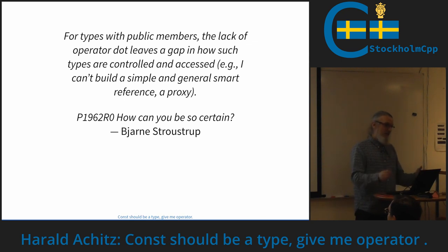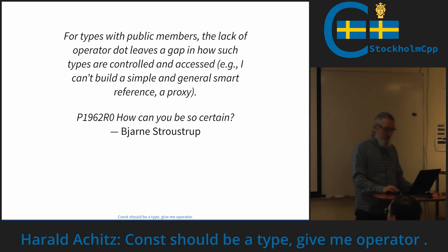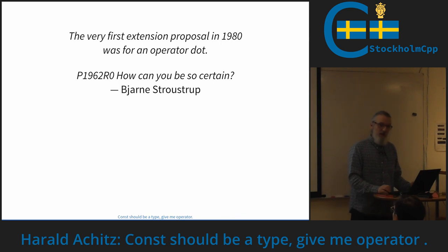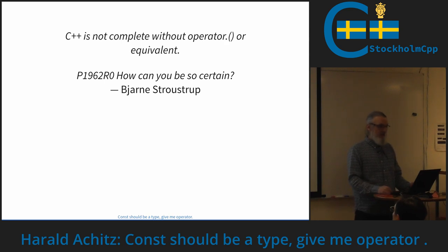The paper continues: for types with public members, the lack of operator dot leaves a gap in how such types are controlled and accessed — exactly as we have seen with `std::optional`. Some people also want their own reference type. And then, very strikingly: the very first extension proposal in 1980 was for an operator dot. This is 40 years ago, and we still don't have it, and no one is asking why.